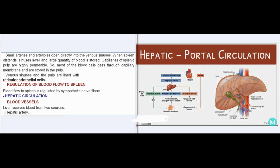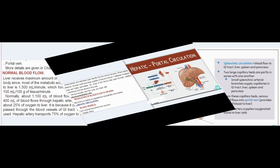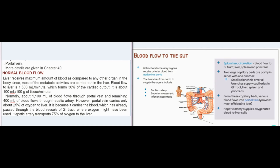Hepatic Circulation - Blood vessels. The liver receives blood from two sources: the hepatic artery and the portal vein. The liver receives the maximum amount of blood compared to any other organ in the body, since most of the metabolic activities are carried out in the liver. Blood flow to the liver is 1500 ml/minute, which forms 30% of the cardiac output, about 100 ml/100g of tissue/minute.